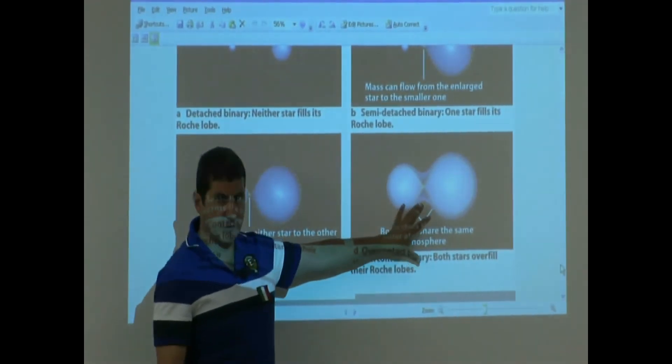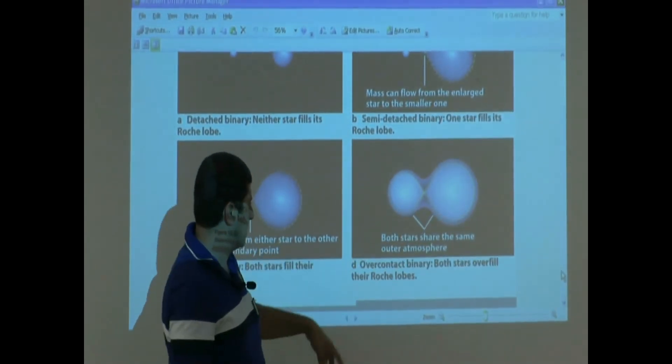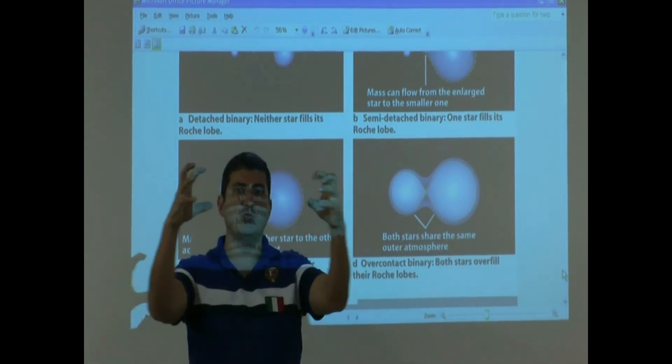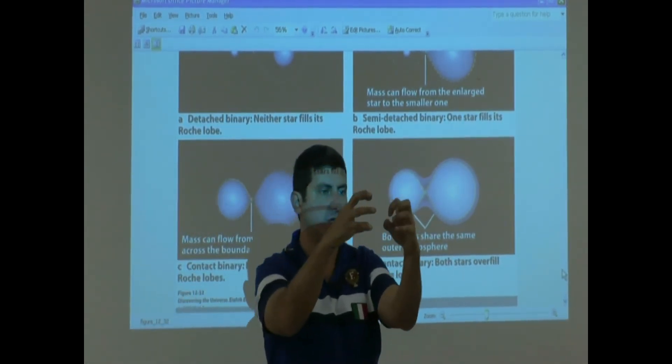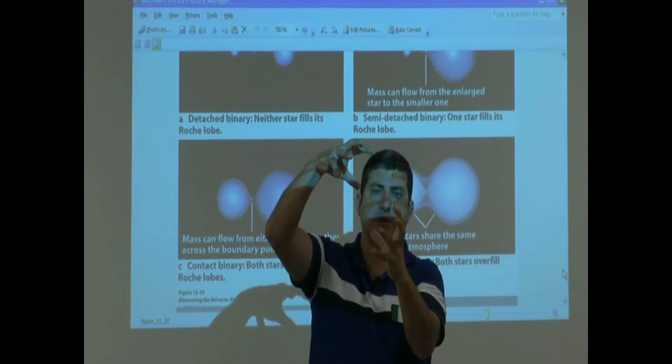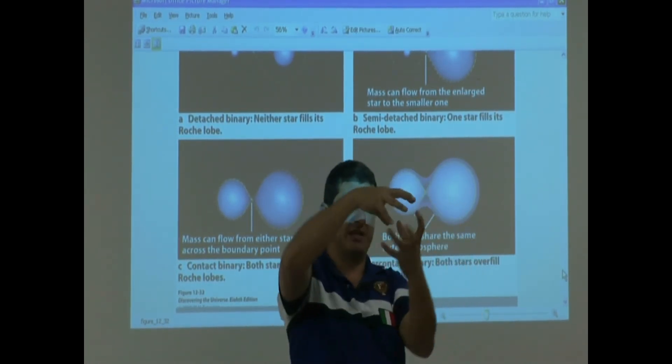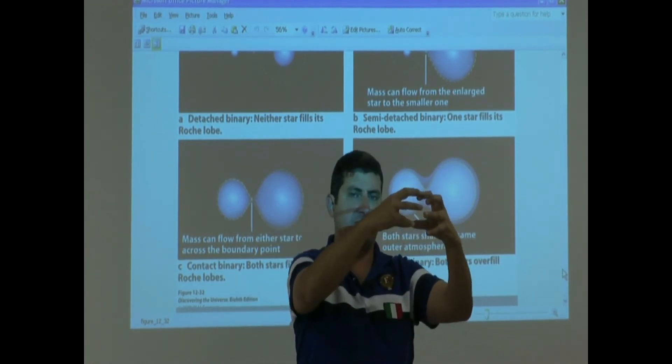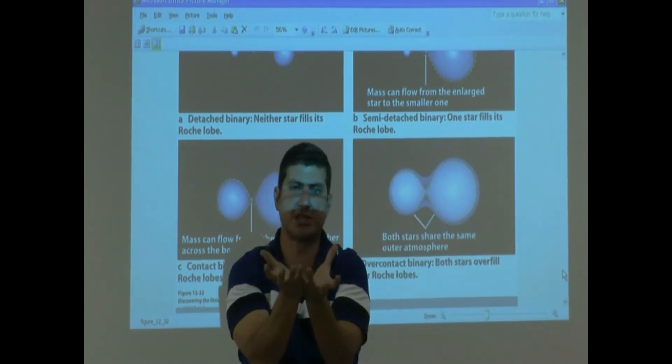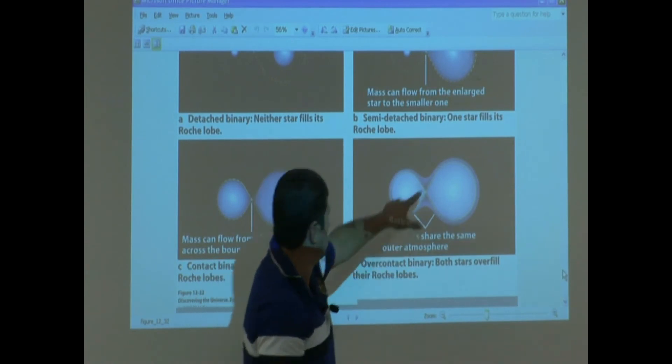This one is more frequently we can find this. This happens when the two stars originally were very close to each other. So this guy fills up, fills up. And then this guy may be starting to fill up, fill up. And then by the time that this guy fills up and then this guy starts to fill up, they kind of look like one star. You see here? Over-contact binary.